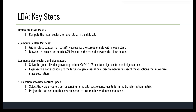Next, we project into a new feature space. We select the K eigenvectors corresponding to the K largest eigenvalues to form the transformation matrix, which maps the original high-dimensional space to a lower-dimensional space. We then multiply the original dataset by the transformation matrix to obtain the lower-dimensional representation, creating a new feature space that maximizes class separation.